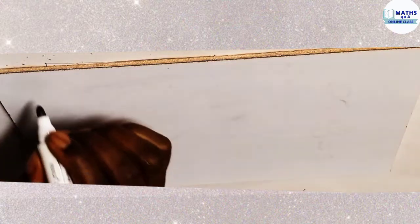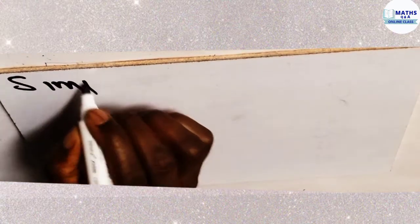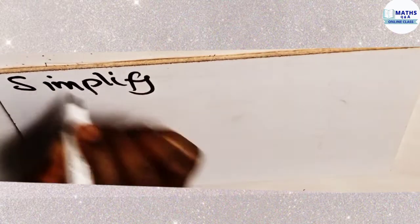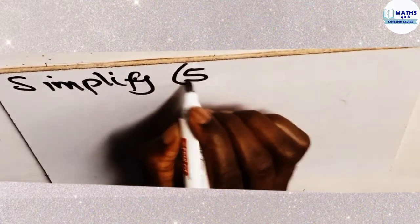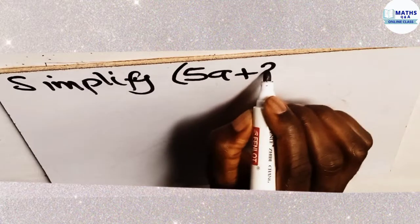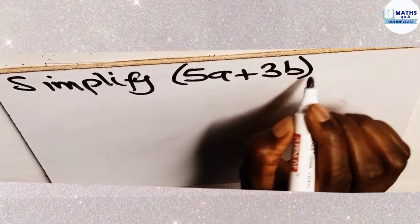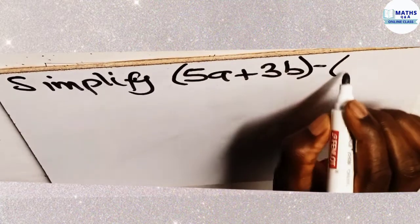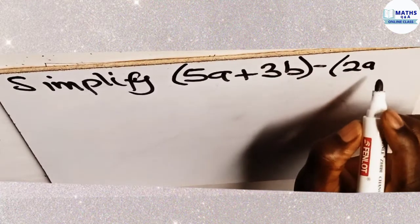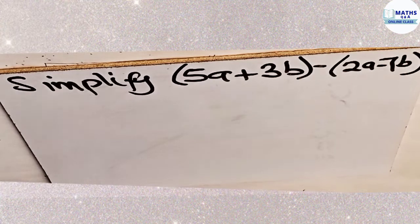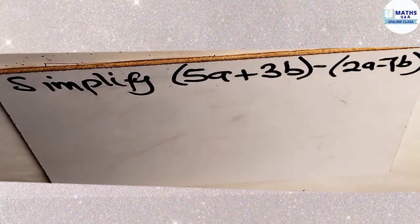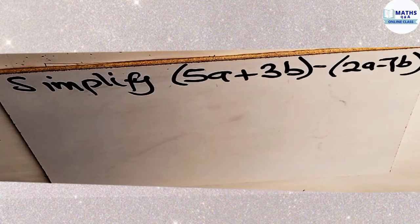So we are to simplify the algebraic expression 5a plus 3b in a bracket minus in a bracket 2a minus 7b. So these are the expressions that we have to simplify. Now let's solve it.